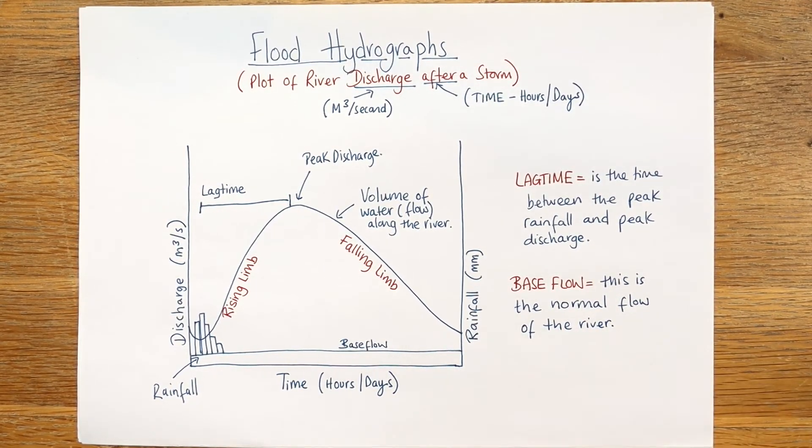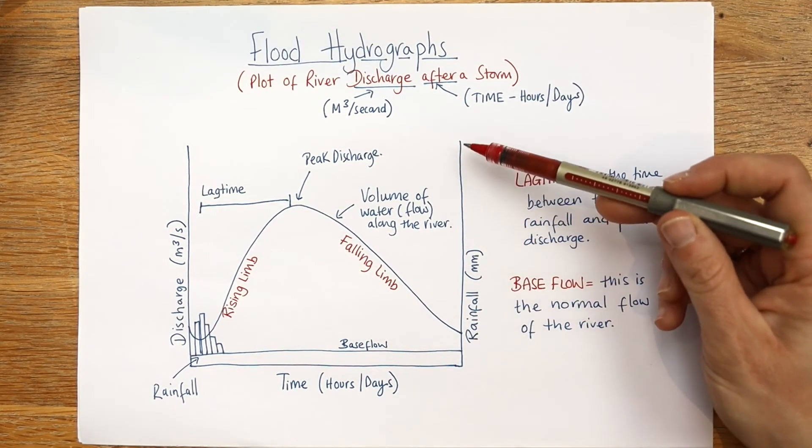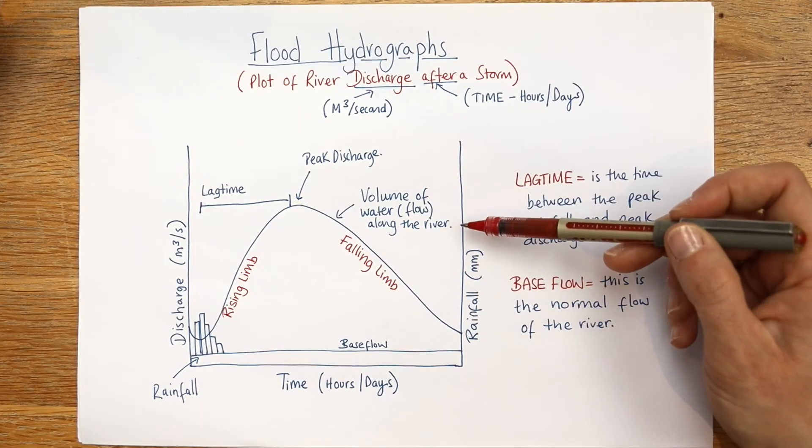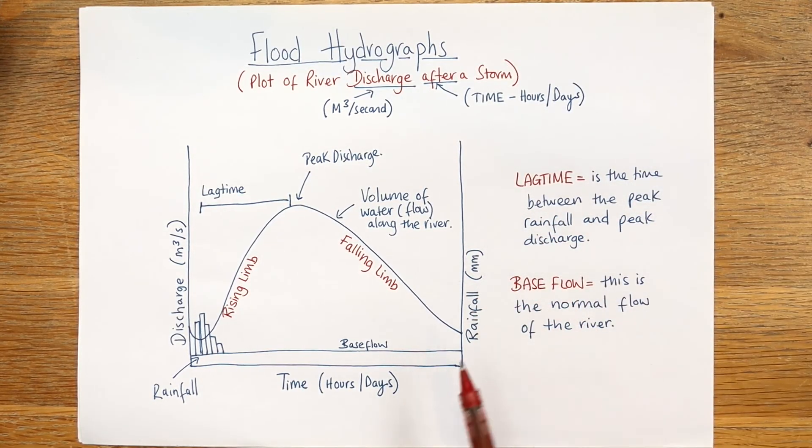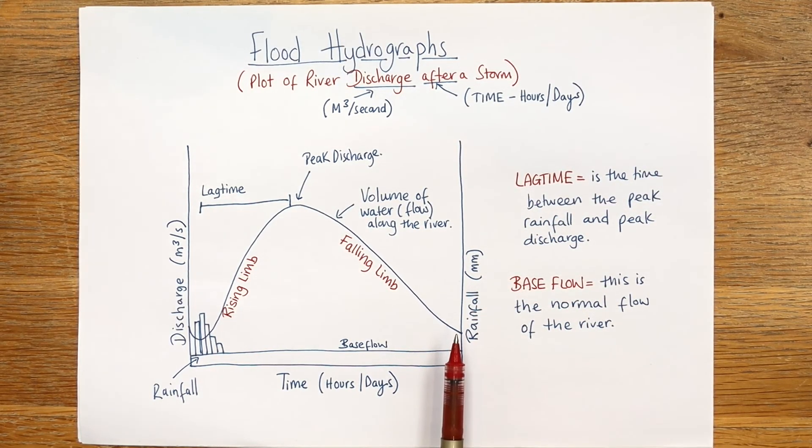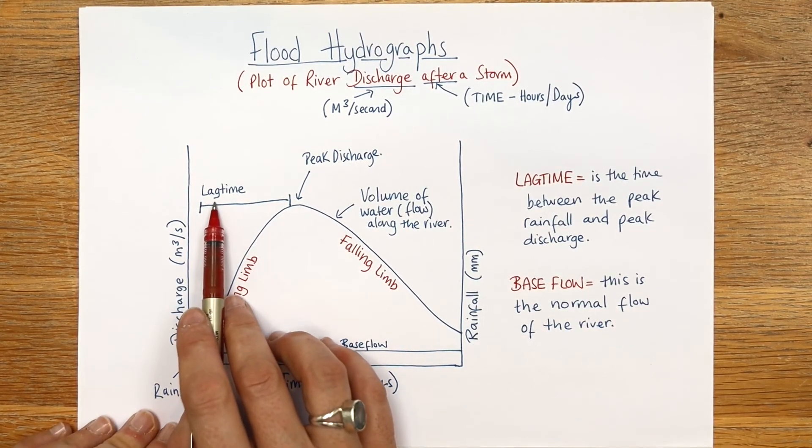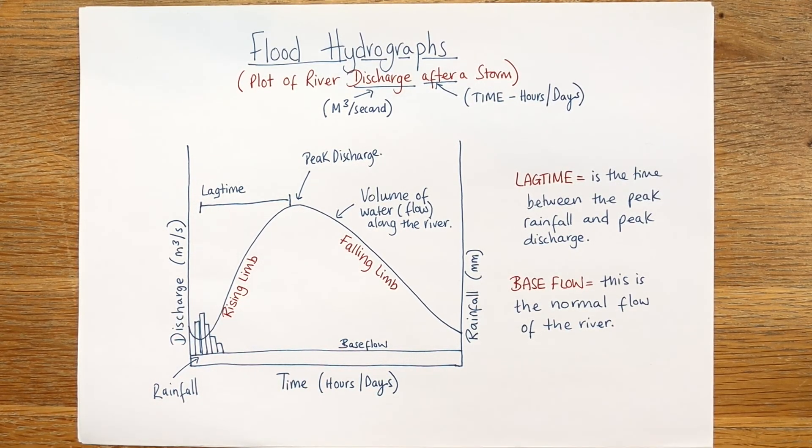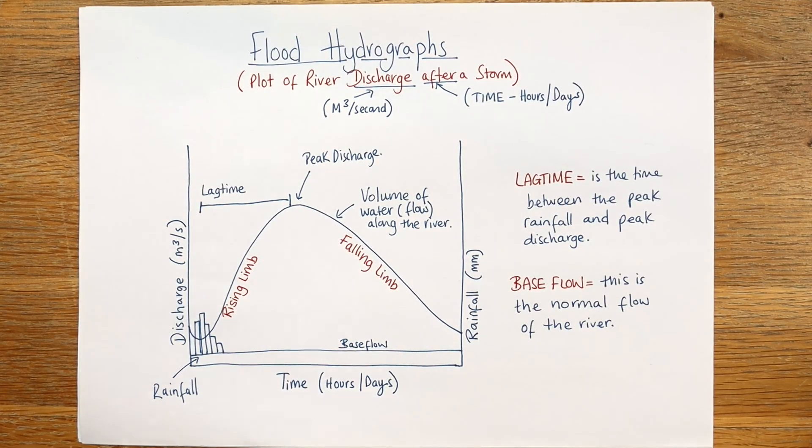Now you would be expected in an AQA GCSE geography exam to discuss the rising limb, the falling limb, and obviously mine doesn't have exact measurements on it, nor does yours, but you would be expected to use that data as well, and certainly to talk about that lag time versus peak discharge versus the base flow. So I hope that's helpful - quick vid there on flood hydrographs.